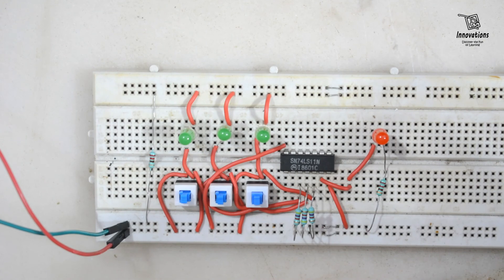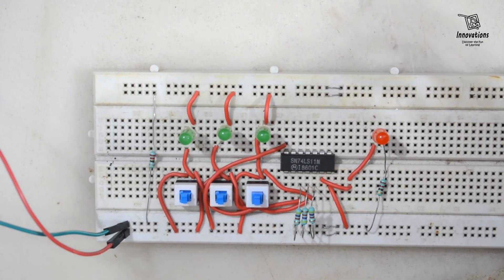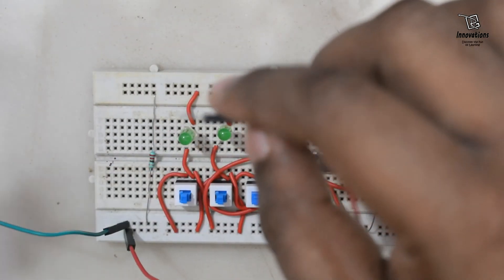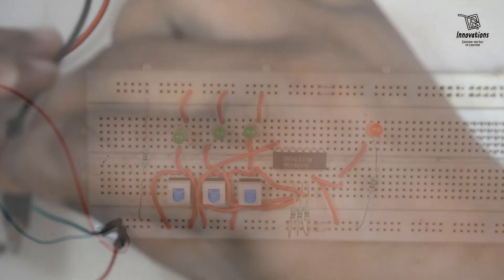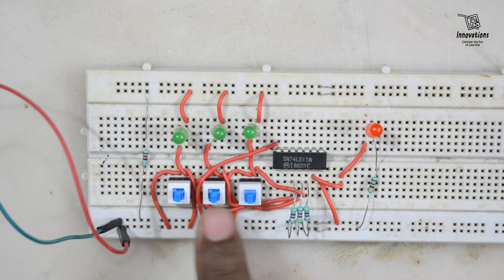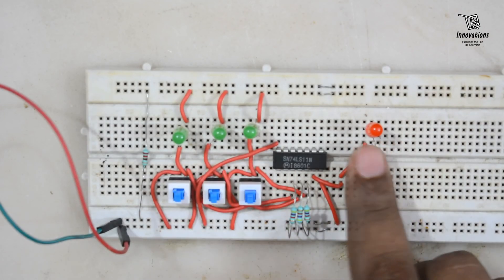We have set the IC. Now we will connect it with the power supply, 5 volt power supply. This is plus and this is minus. Initially we have all the inputs to low state. So the output is also low.